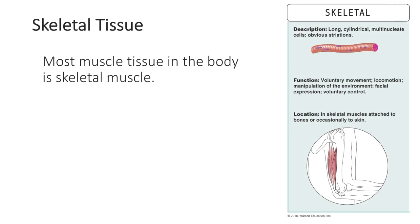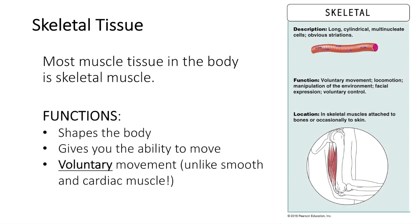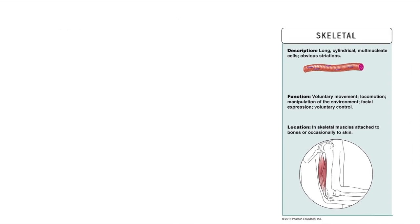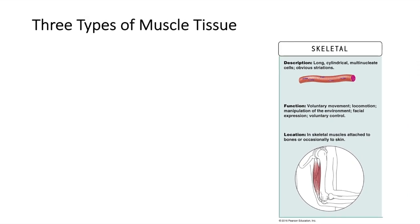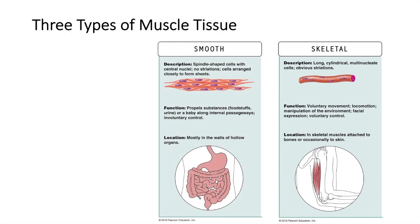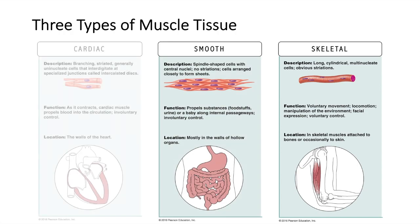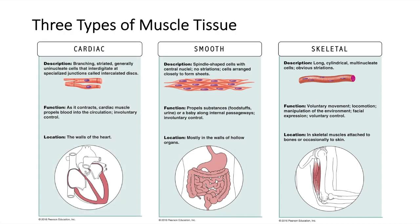Most of the muscle tissue in the body is skeletal muscle. Skeletal muscle shapes the body and gives you the ability to move. The remaining muscle tissue of the body consists of smooth muscle that forms the walls of hollow organs, and cardiac muscle that forms the walls of the heart.